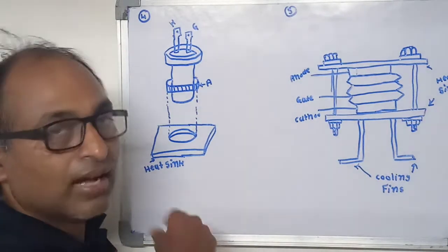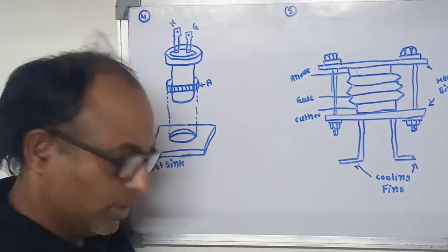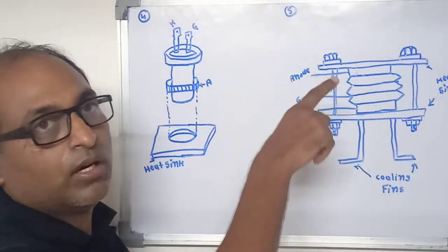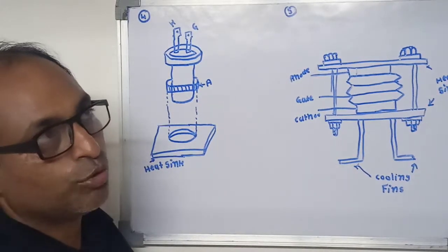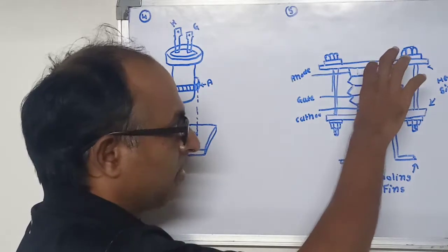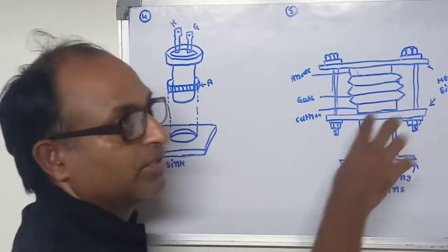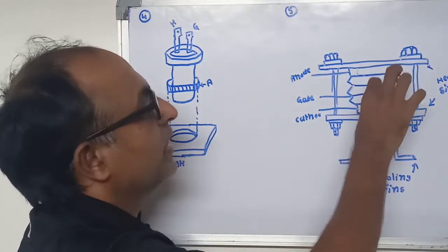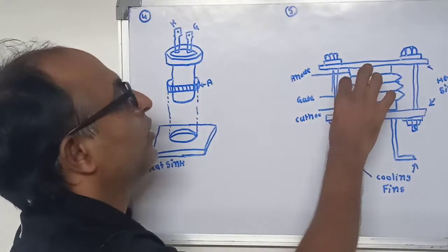Pressure pack, also known as hockey puck or discs due to its shape. The SCR is clamped between two heat sinks. External force is applied onto the SCR in such a way that there is no distortion of any part of the SCR.